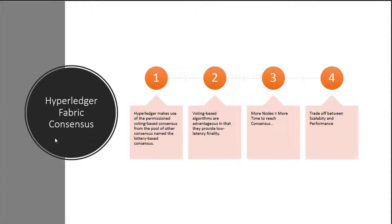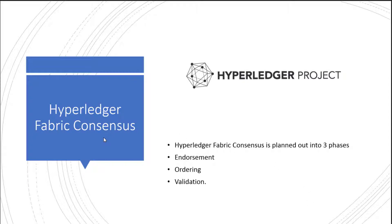If you have more nodes, it's going to typically take more time to reach consensus - that's one of the trade-offs. Another trade-off is scalability and performance: the greater you scale out, the lower the performance. If you compare it to Ethereum, the more nodes on Ethereum, that transaction just takes longer because the blockchain is going to be updated among nodes. Consensus is planned out in three phases: the first is endorsement, the second is ordering, and the third is validation.